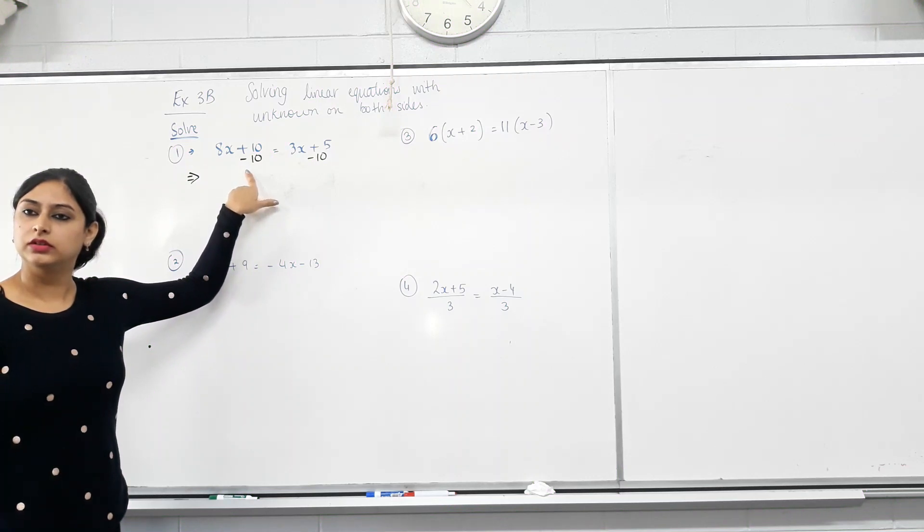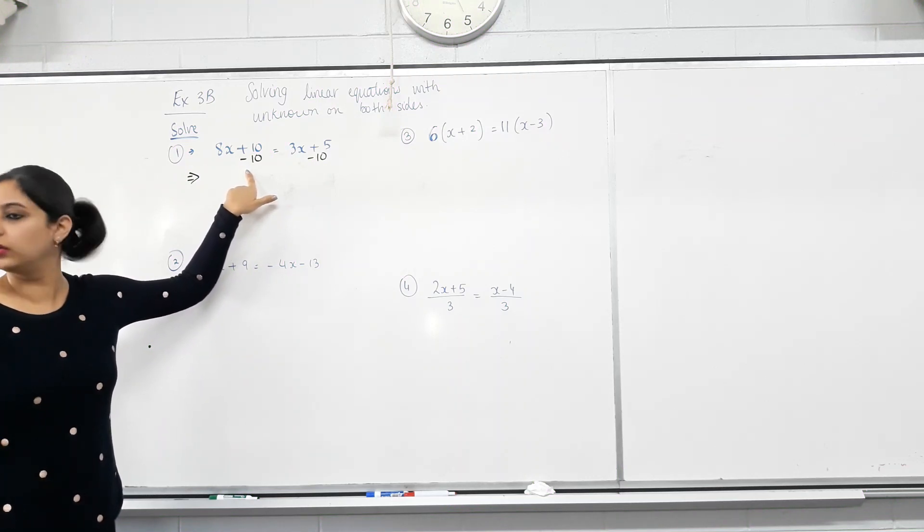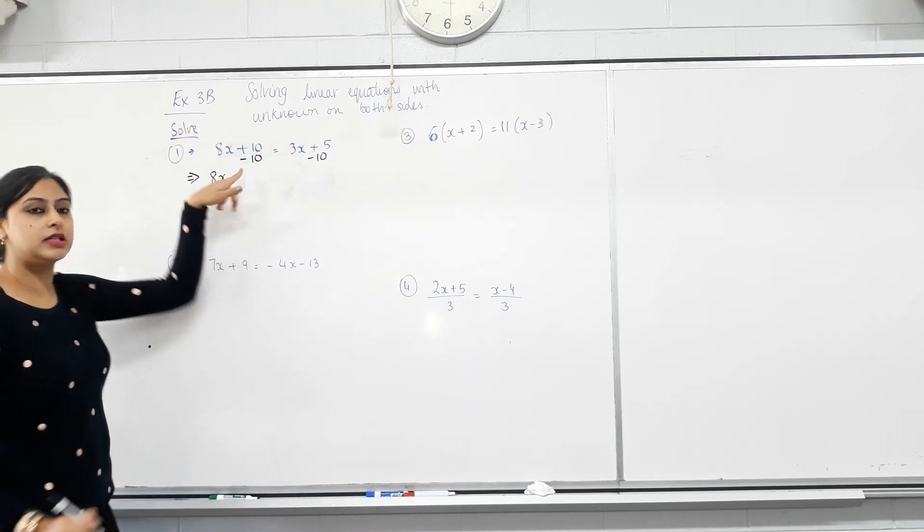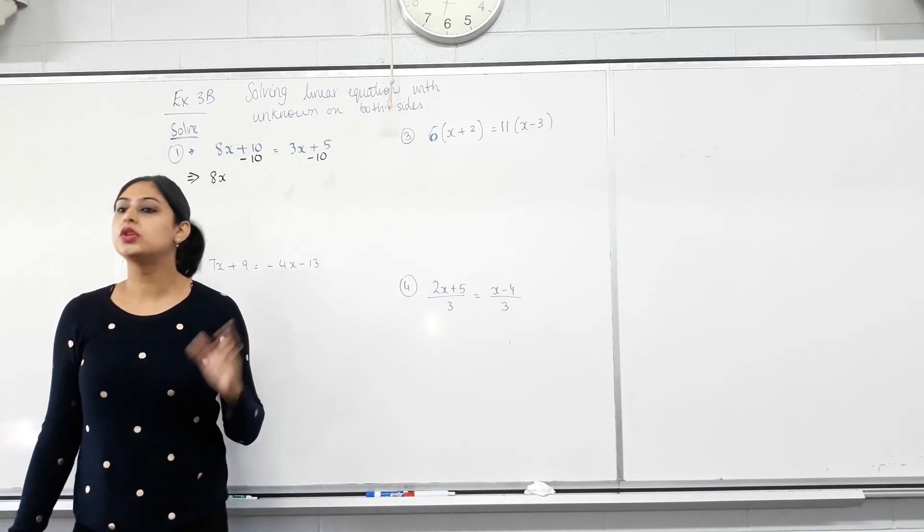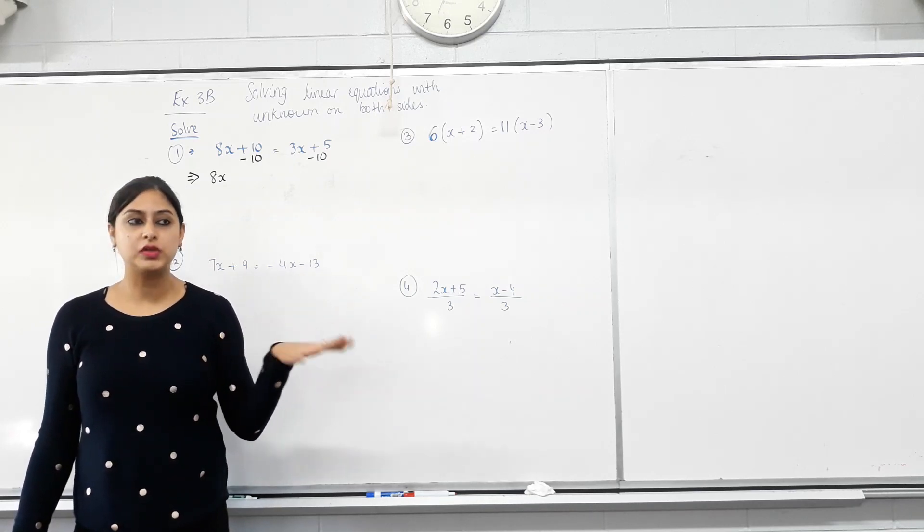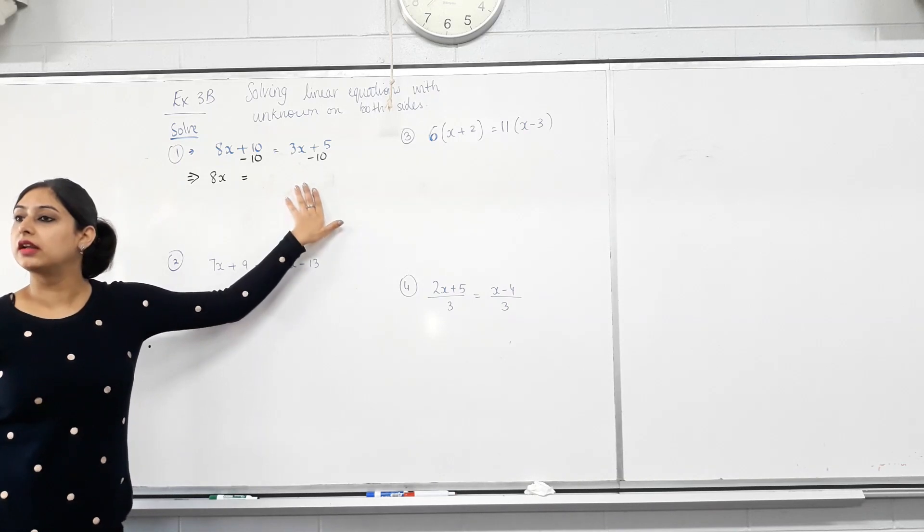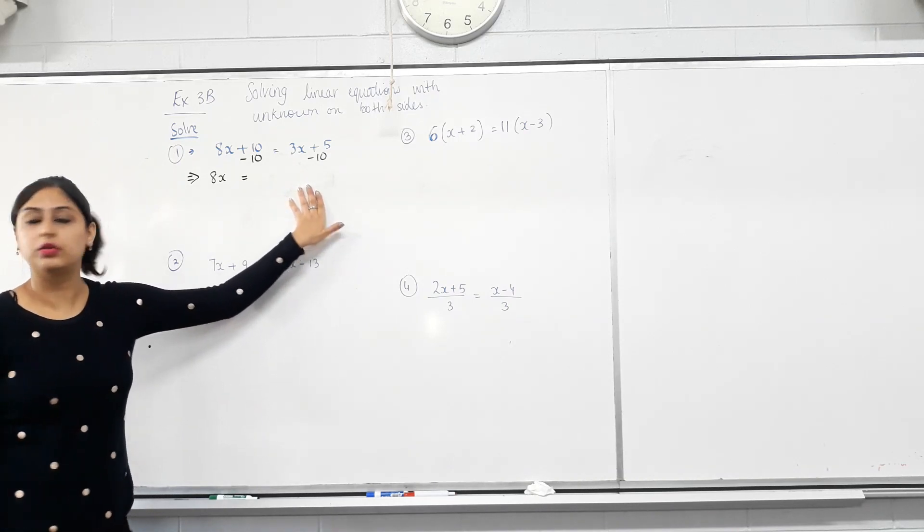Are they like terms? No. 8x and 10. Can I take them away? No. So 8x. Yes. 10 take away 10. Is that 0? Yes. Do I write the 0? No. Looks ugly there. We don't. Then, 3x and 10. Like terms? No. So just 3x.